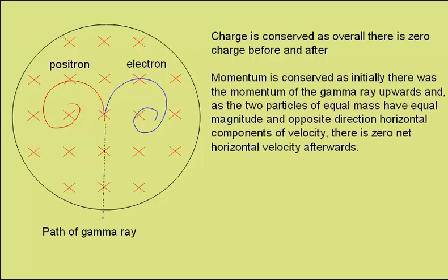Momentum is conserved, as initially there was the momentum of the gamma ray. Photons do have momentum, though you don't need to know how to calculate it at A-level. As the two particles have equal mass and have equal magnitude in opposite direction horizontal components of velocity, there is zero net horizontal velocity after the pair production.